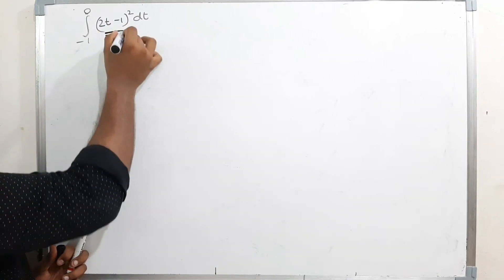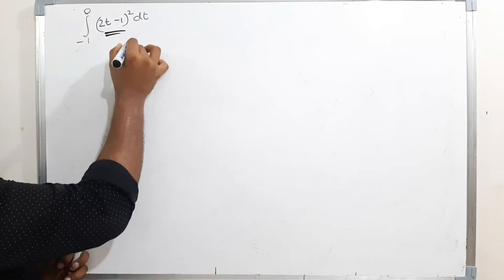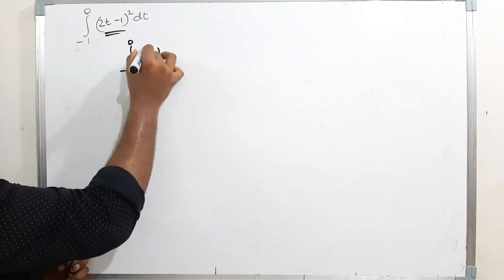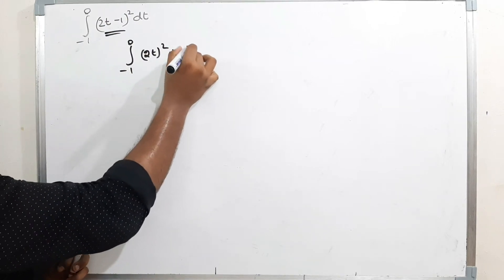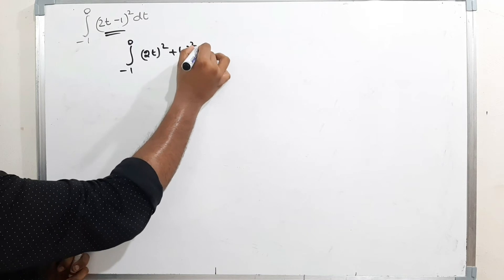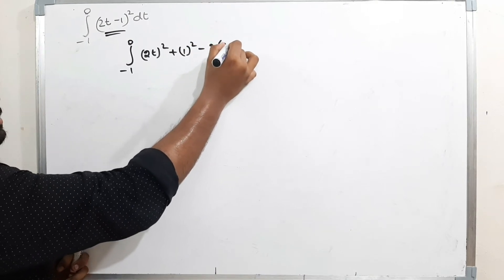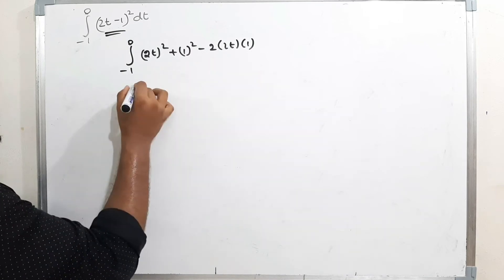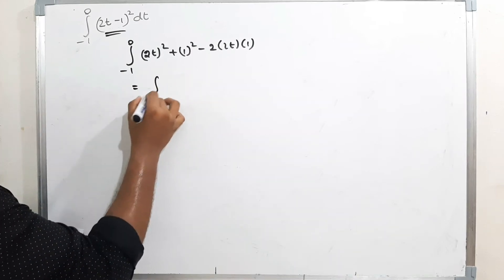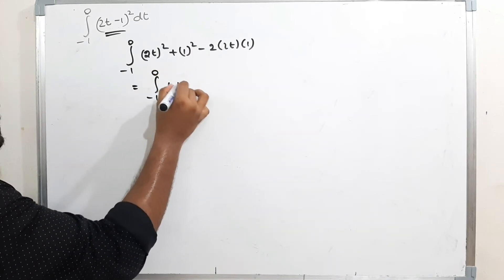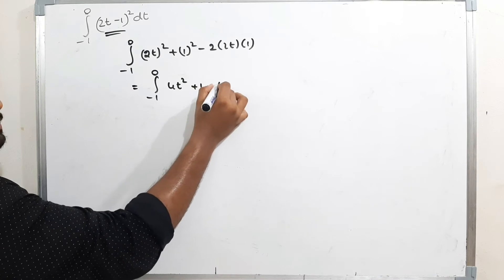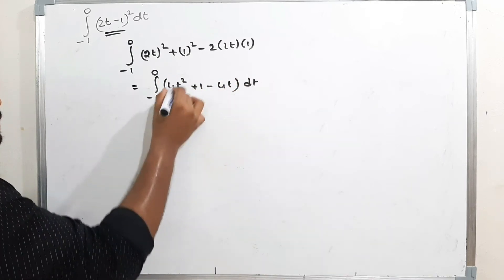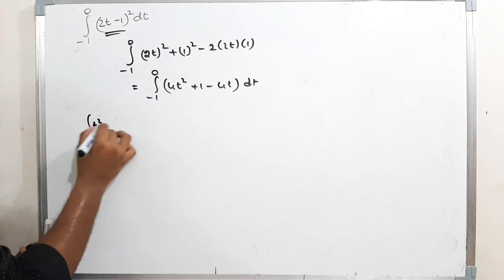Expanding (2t - 1)²: using (a - b)² = a² + b² - 2ab, we get 4t² + 1 - 4t. So the integral becomes: integration from -1 to 0 of (4t² + 1 - 4t) dt.